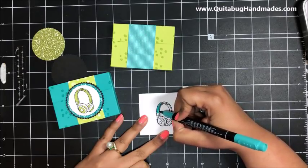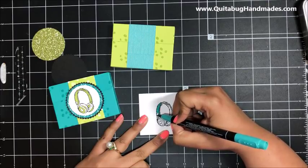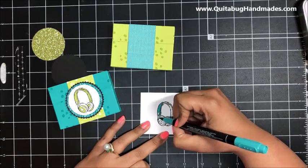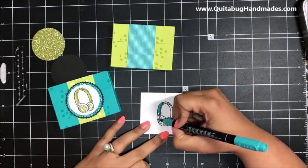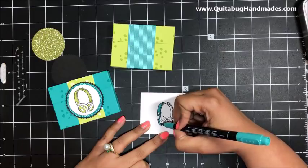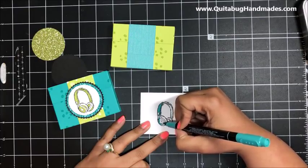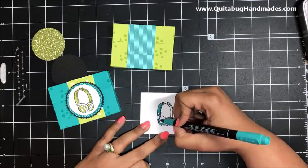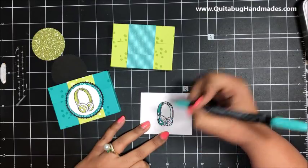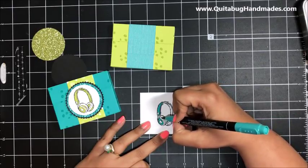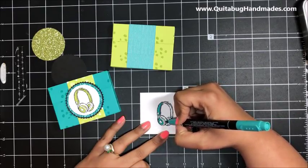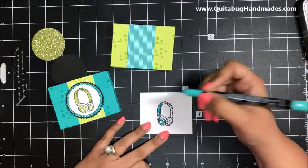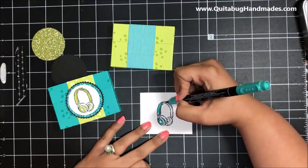The thing that you have to remember about the Stampin' Writes is they are not designed to do what the blends can do. These are designed for adding color but not for doing what the blends can do. When you're using these, you want to be really quick with your movements. You don't want to sit in one spot coloring for too long because your paper is going to start to peel and tear. You're going to have very uneven coloring.